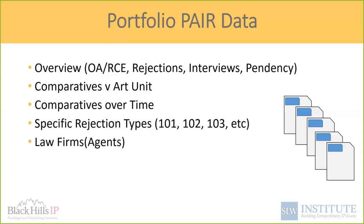A question came in: Do you think law firms can use this analytic information to game the system, such as pursuing narrow claims earlier in prosecution to get an earlier allowance? Absolutely, yes. This is specific knowledge you can use — especially if you've got art unit information where you've got a full look at an examiner. If you know an examiner has a tendency to give allowances with interviews, especially if you can go back and compare what you're arguing to what the examiner typically argues.